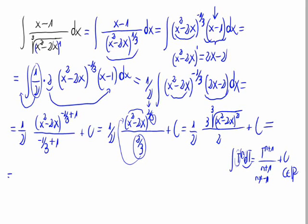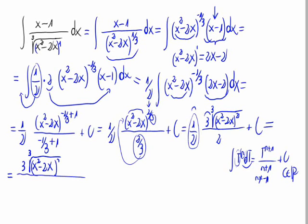Now we just have to multiply this 1 half times the other fraction to obtain the result. That would be 3 times the cube root of x squared minus 2x, all raised to 2, with the denominator being 2 times 2 equals 4, plus the constant c, where c is from the set of real numbers. This is the result of the given integral.